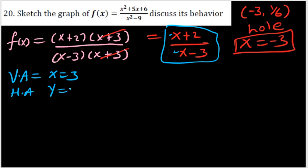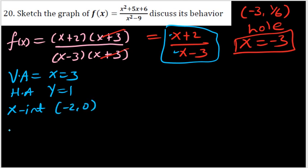Since the degree of the numerator and denominator are the same after simplification, the horizontal asymptote is y = 1 (ratio of leading coefficients). The x-intercept is where the numerator equals zero: x = -2, giving the point (-2, 0). The y-intercept is found by substituting x = 0: y = 2/(-3) = -2/3, giving the point (0, -2/3).